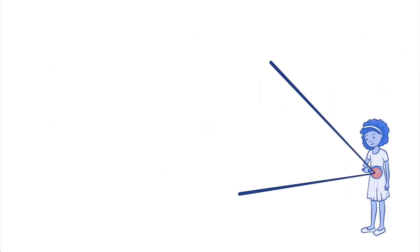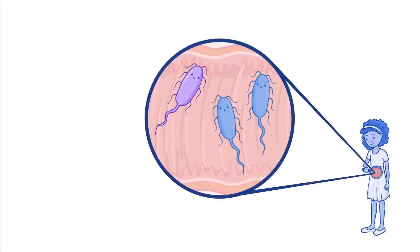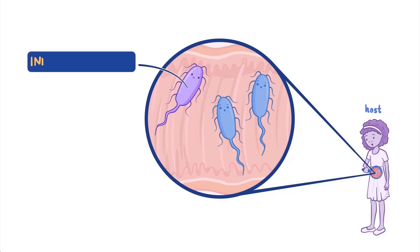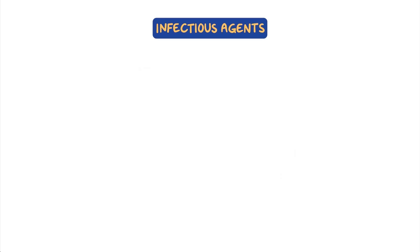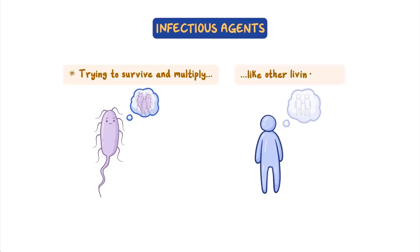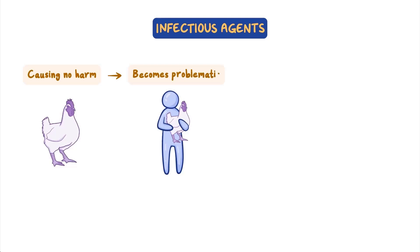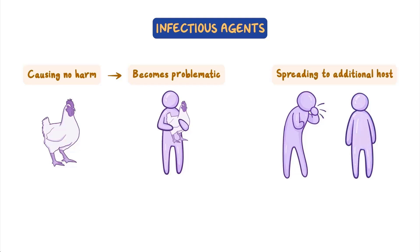However, some microbes can cause illness when they live and multiply in another organism, called a host. We call this type of microbe an infectious agent and the illness it causes an infectious disease. These infectious agents are not all inherently bad. Most are just trying to survive and multiply like all other living things on this planet. Some agents even live and multiply in hosts without causing any harm, and become problematic only when they end up in hosts where they do not belong. Other microbes almost always cause disease in their hosts and, to survive, must spread to additional hosts and infect them.